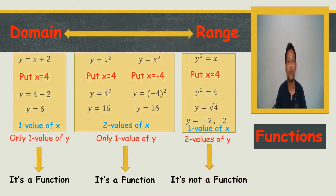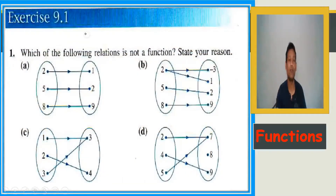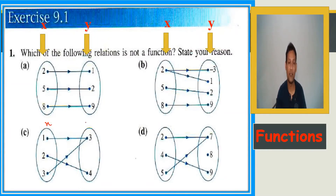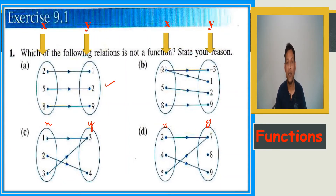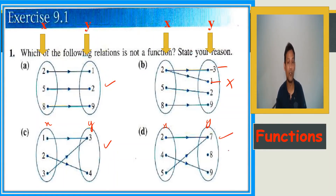To summarize: one value of y is called a function; two values of y means it is not a function. Looking at question 1 of exercise 9.1 with mapping diagrams — where x maps to y — if one x gives one y, that is a function. If one x gives two different results, that is not a function. Two values of x giving one image is still a function.